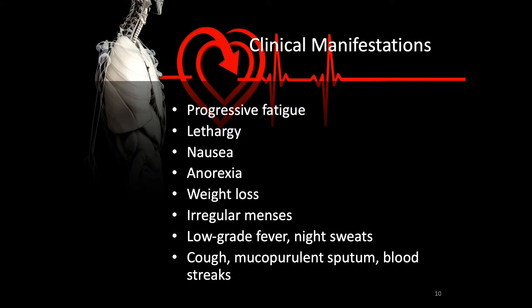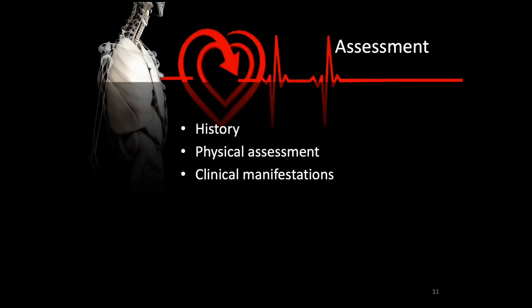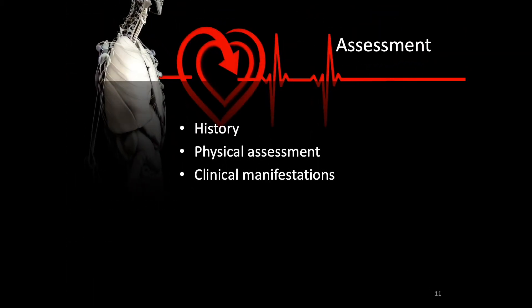Additional TB symptoms include night sweats, cough, mucopurulent sputum, and blood streaks. The cough with blood-streaked purulent sputum and night sweats have been hallmarks of TB for years. The patient most at risk for TB is already immunocompromised, so a thorough history of their condition and living conditions is essential. Crowded living conditions are known to increase the incidence of tuberculosis. Physical assessment should include signs of malnourishment, as people with TB are often malnourished.